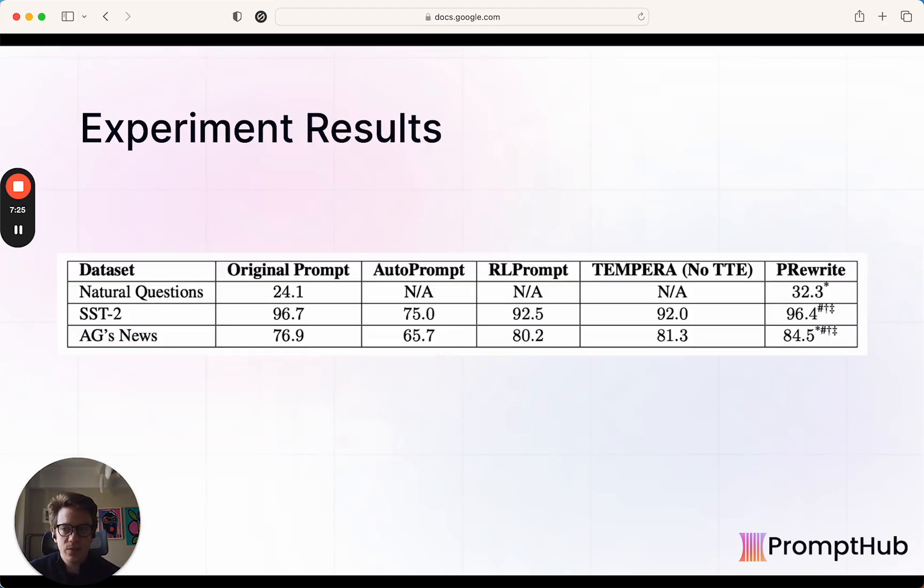And they tested PRewrite against a couple other of the automated methods. And so looking at the major results here, we can see PRewrite outperforms the original prompt on, where is it? I tested AG News and Natural Questions, but it actually underperforms compared on the SST-2 dataset. And the reason for this is this dataset is just a sentiment analysis dataset. And it's pretty basic, you know, so it's like this movie sucked and you have to classify that as negative, positive, or neutral. So there's not that much room for improvement of the prompt because it's a pretty simple use case. That's just something to note.